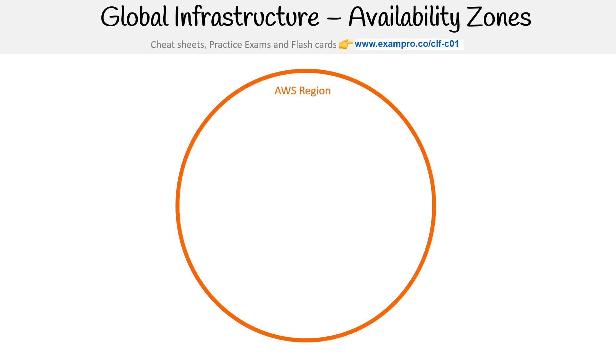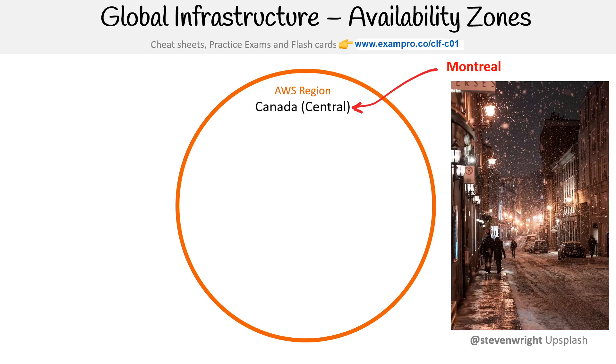So we just covered regions and availability zones, but I really want to make it clear what they look like. I have a visual representation here. So let's say we have our AWS region — in this particular one we have Canada Central, which is Montreal, so CA Central one.